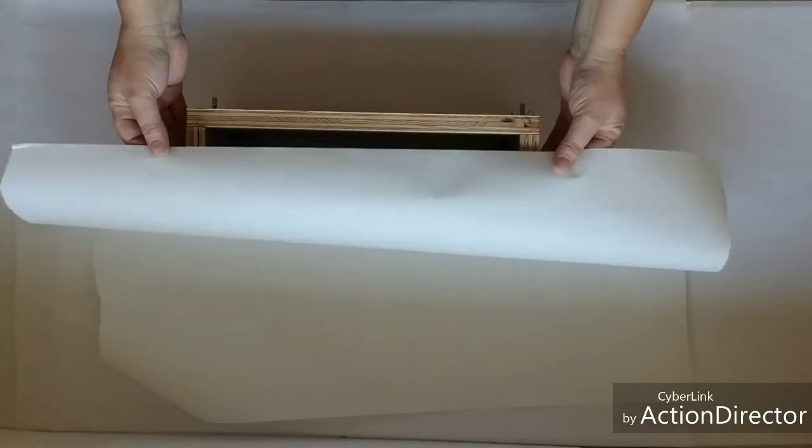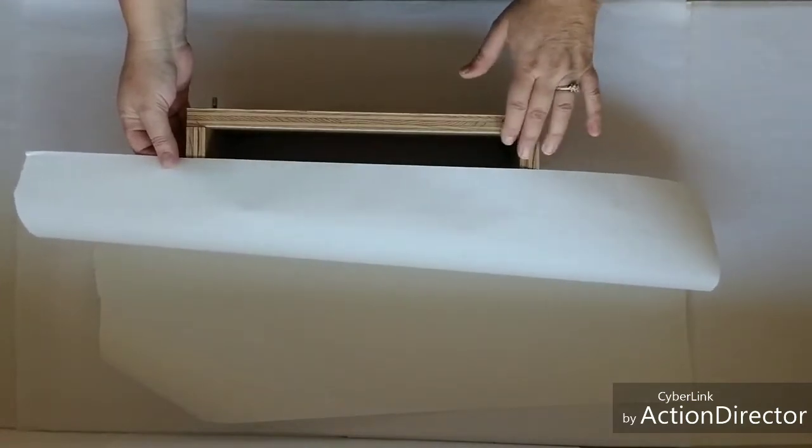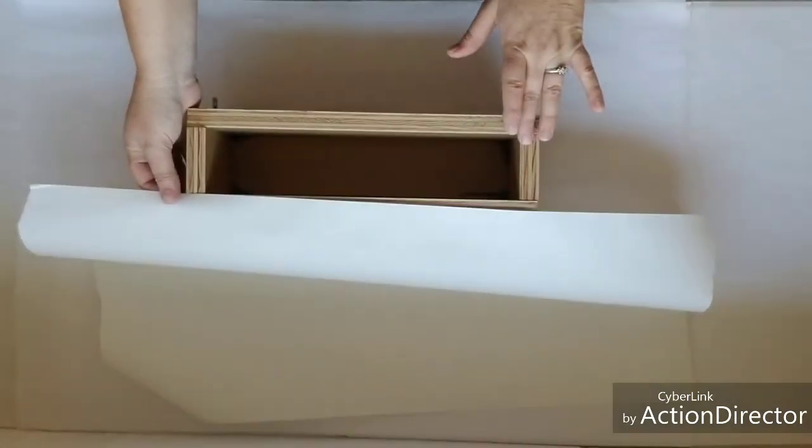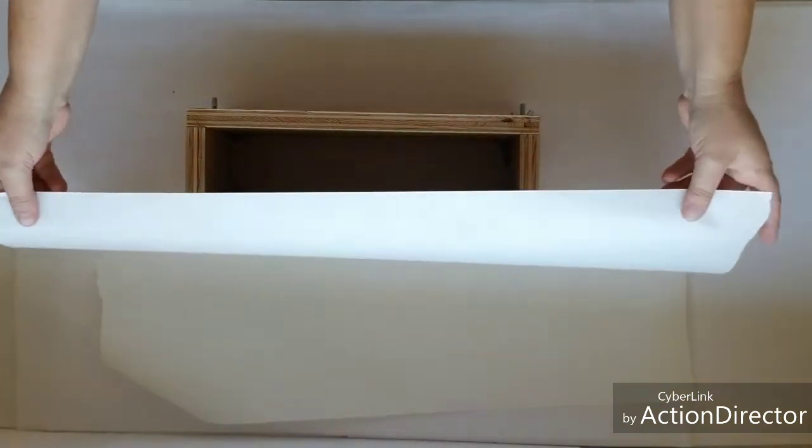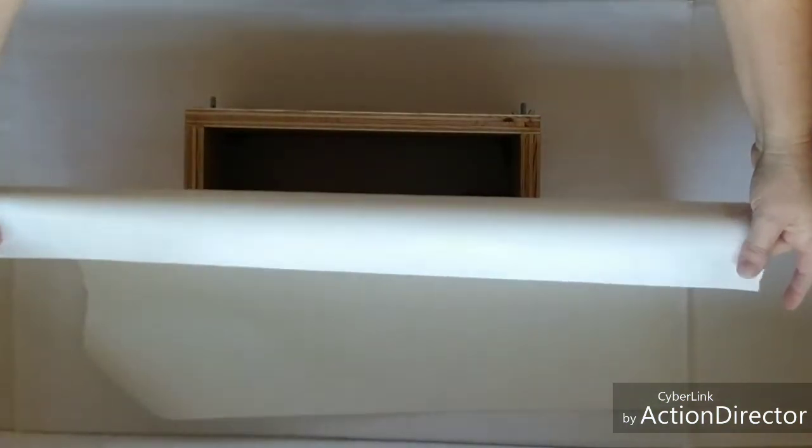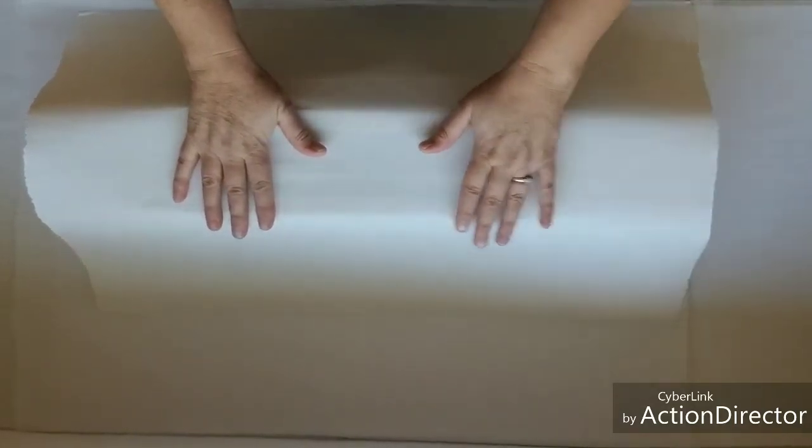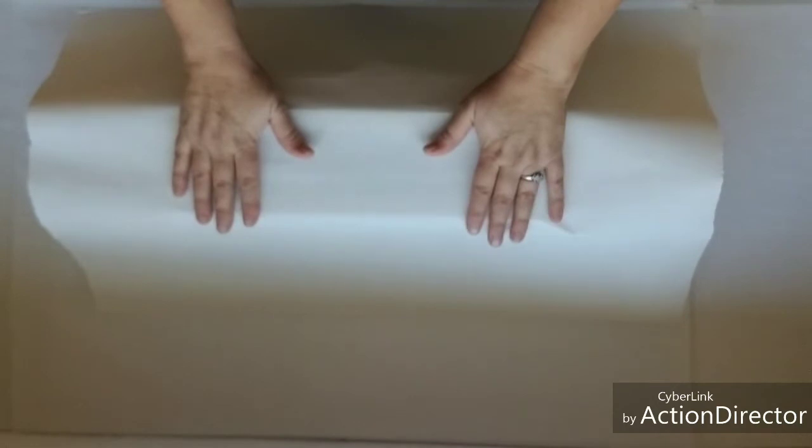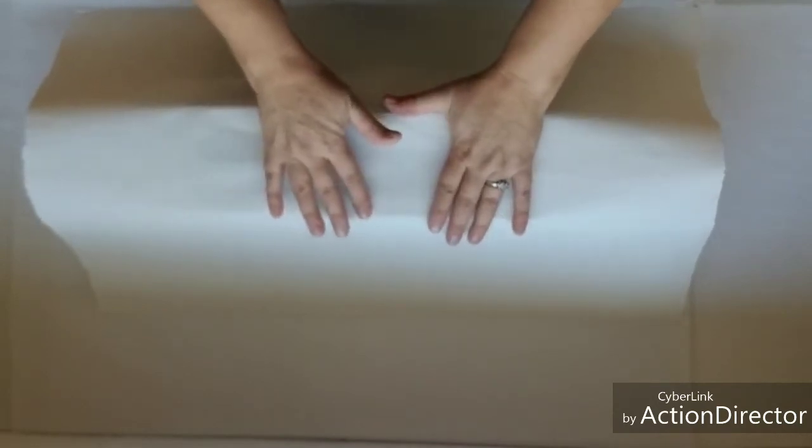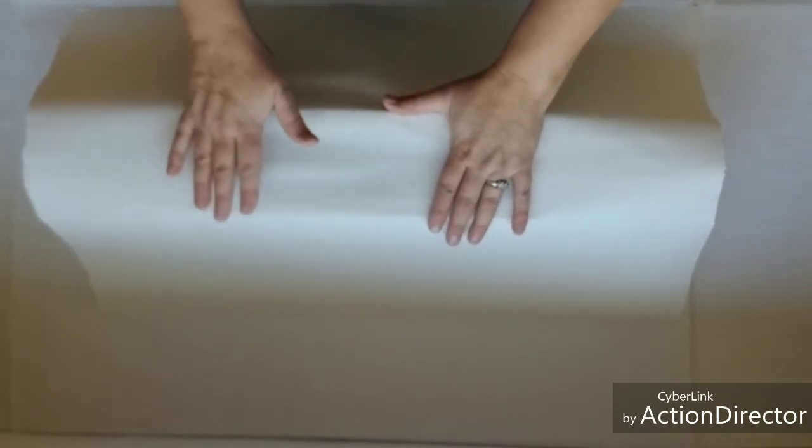You want to make sure that you have enough to come all the way up to the top of your side here. Basically, we're going to turn the shiny side down and center your paper so that both sides are even.